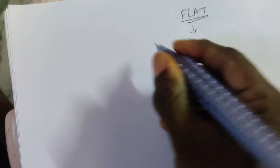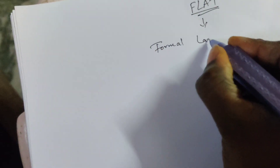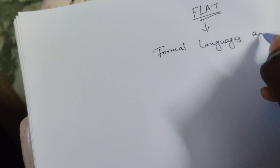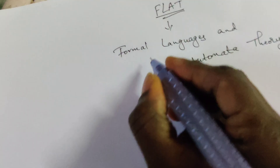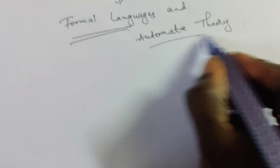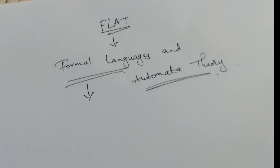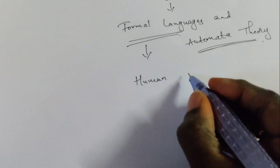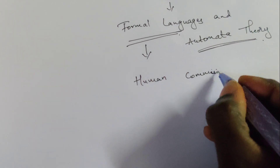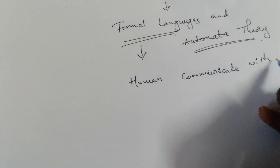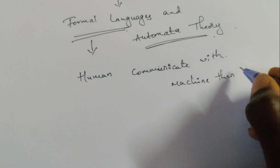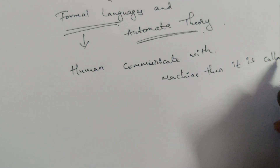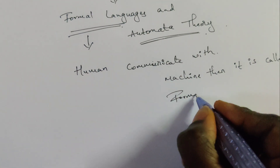In this session we are dealing with FLAT, which stands for Formal Languages and Automata Theory. Here we will come across what is formal language and what is automata theory. Formal languages means how humans communicate with machines.